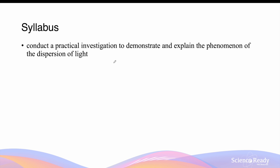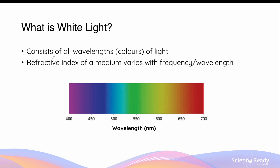This video is on dispersion of light. Before we go through what dispersion is, it's important to define what white light is. White light consists of all wavelengths or colors of light. If we theoretically divide all the different colors that make up white light into its spectrum, this is what we will get.